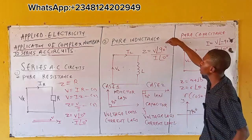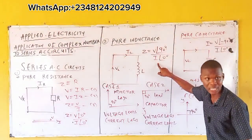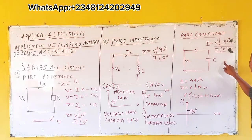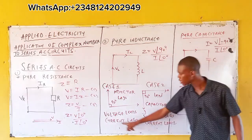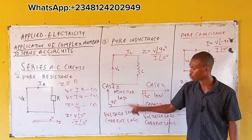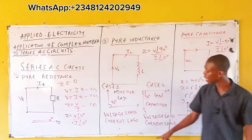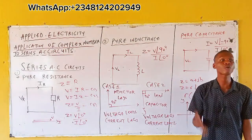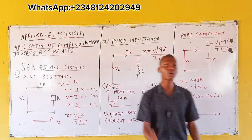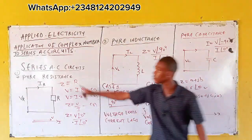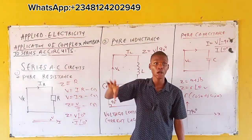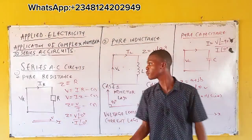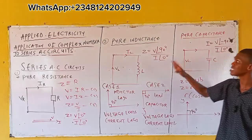If voltage is leading, the current is lagging by 90 degrees. If voltage is lagging, the current is leading. So: for case one (inductor), voltage leads and current lags; for case two (capacitor), voltage lags and current leads. For pure resistance, neither leading nor lagging occurs — they are in phase with no angle between them.